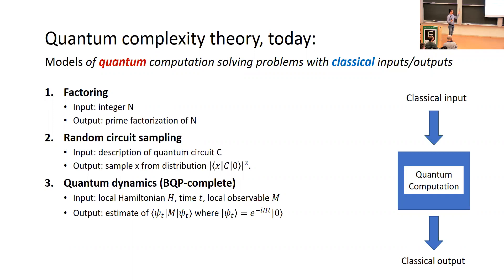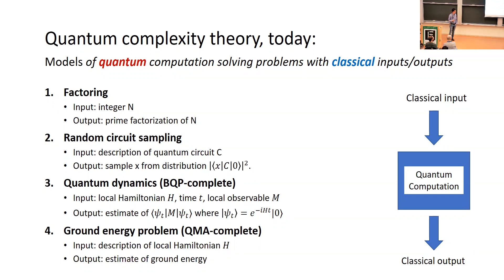That quantum dynamics problem happens to be BQP-complete, meaning if you can solve it you can solve any problem a quantum computer can efficiently solve. Another example is the ground energy problem: given a description of a local Hamiltonian, estimate its ground energy — classical input, classical output. This last one is QMA-complete. I'll return to QMA-completeness shortly, but for now think of it as the quantum analog of an NP-complete problem.